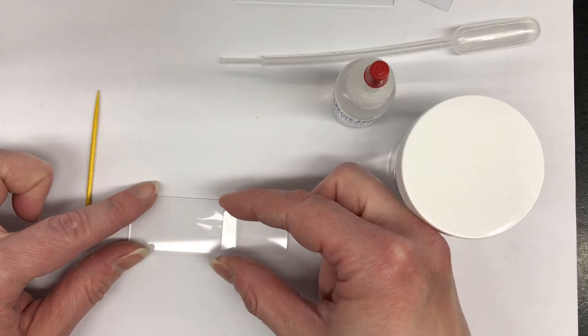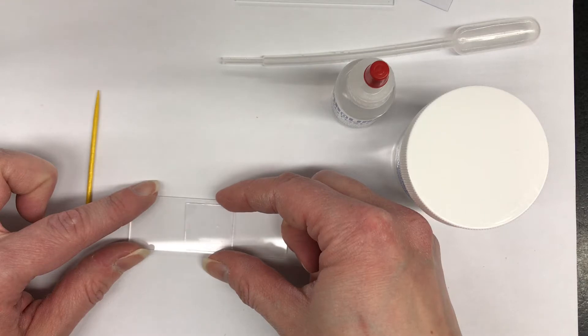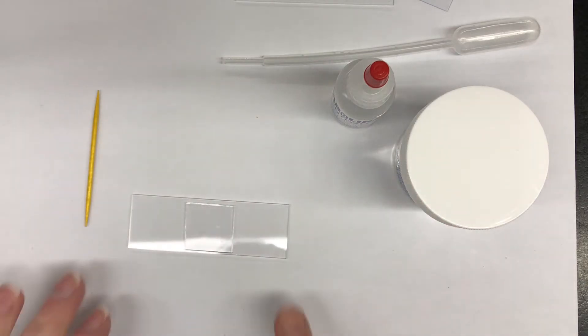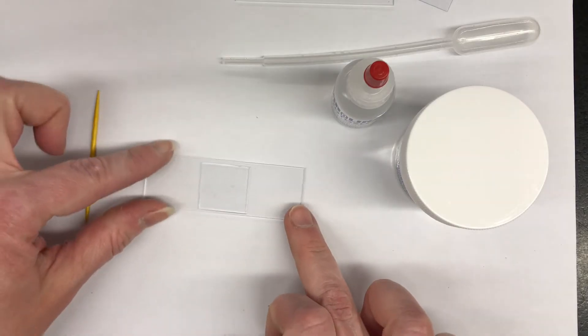You're going to place the cover slip on the glass slide. One edge of it is going to be on the glass slide, and you're going to slowly lower it down onto your slide. So that is our amoeba specimen slide.